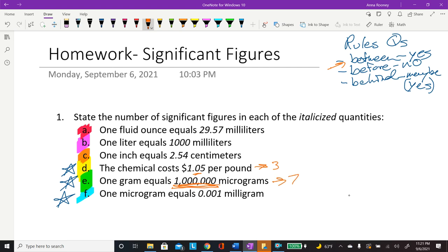And then this last one, are these, so that is behind. And then this last one is one microgram equals 0.001 milligrams. So is that between, before, or behind? Well, it's before. So these are not significant figures. So there's only one sig fig in that one.